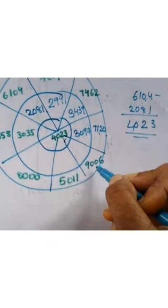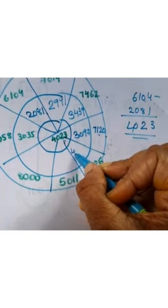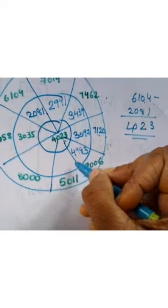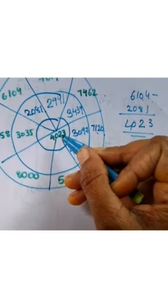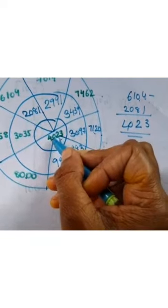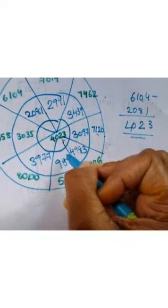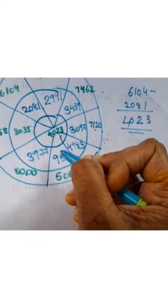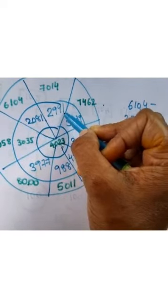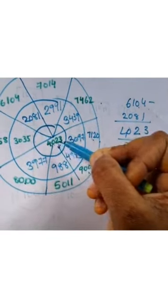Next, when we subtract 9006 with 4023, we get 4983. And next, 5011 minus 4023, we get 988. And last, 8000 minus 4023, we get 3977. Now we complete the number wheel. When we subtract each term — the outer with the inner — we get the center number 4023.